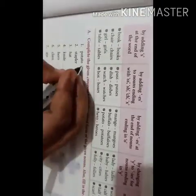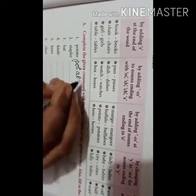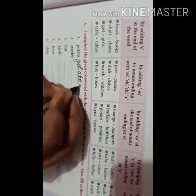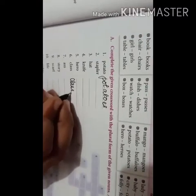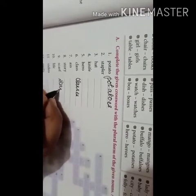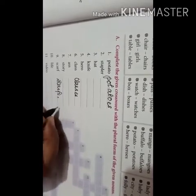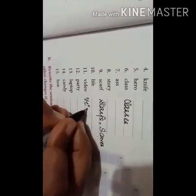Now students, you have to write the plural of these words. As you know, potato — the plural is potatoes. If a word ends in 'o', we add 'es' at the end. For example, class — classes. Scarf — if the word ends in 'f', we can write scarves, s-c-a-r-v-e-s. Both are right. Video — you can write v-i-d-e-o-s. I have solved four examples for you.